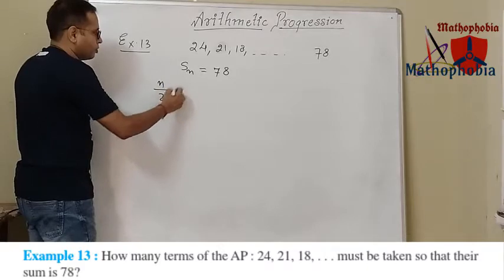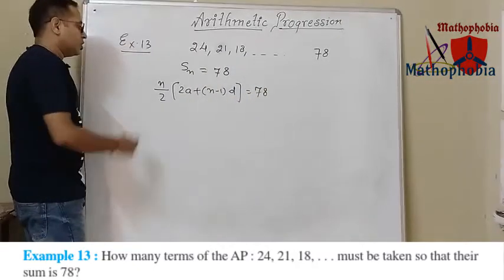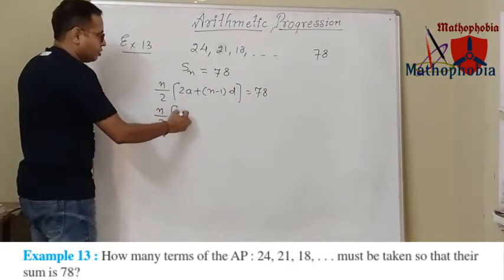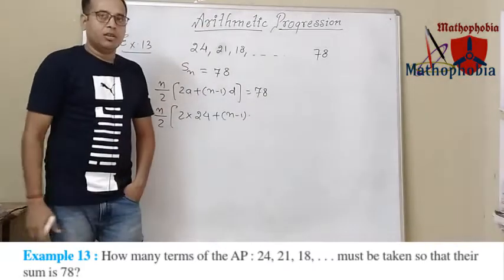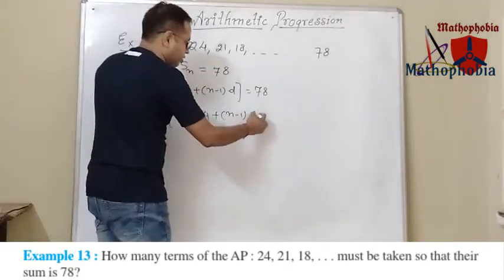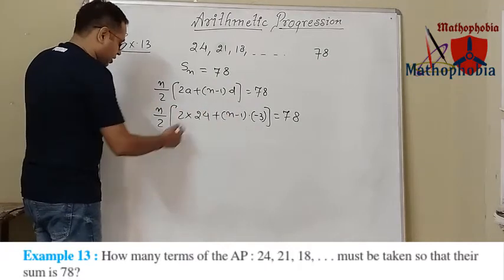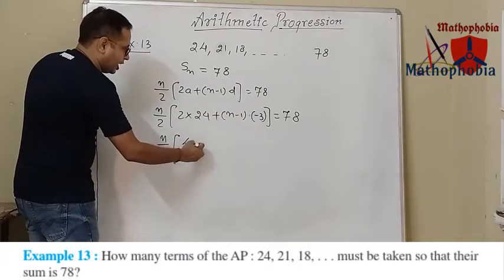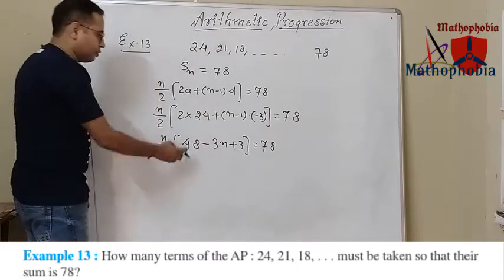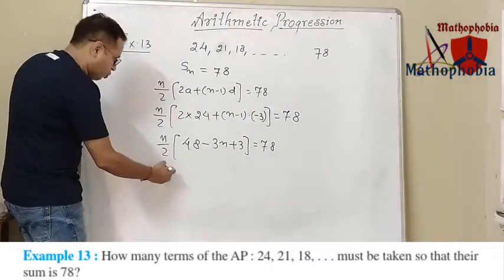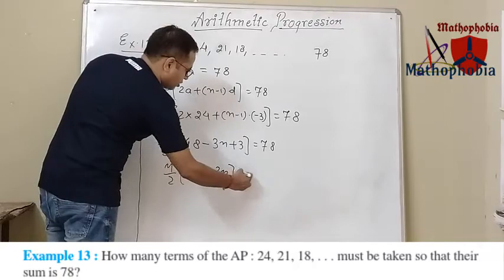Let's put the formula: n upon 2 times 2a plus n minus 1 into d equals 78. What is the value of a? a is 24. What is the value of d? 21 minus 24 equals minus 3. So n upon 2 times 48 plus n minus 1 into minus 3 equals 78. Expanding: n upon 2 times 48 minus 3n plus 3 equals 78, which gives n upon 2 times 51 minus 3n equals 78.